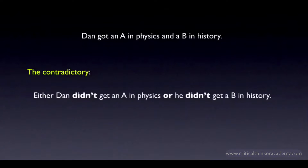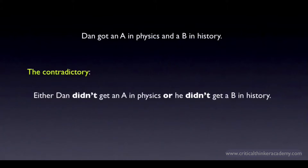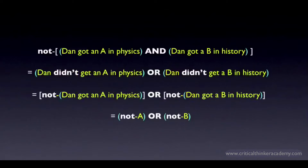Either Dan didn't get an A in physics, or he didn't get a B in history. The contradictory of a conjunction is a disjunction — an or claim. You construct it by changing the and to an or and negating each of the disjuncts. If you wanted to be really formal about it, you could write a derivation of the contradictory that looks like this. But the rule is fairly simple to remember.